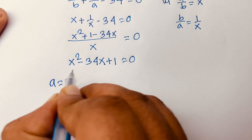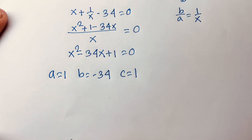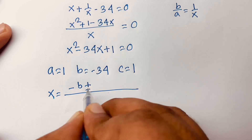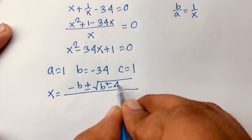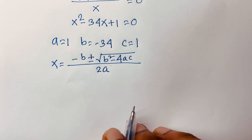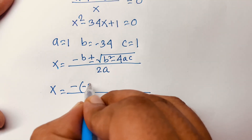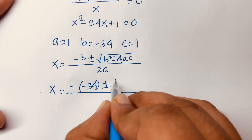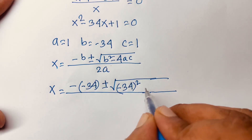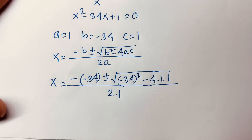So here A is equal to 1, B is equal to minus 34, and C is equal to 1. We know the quadratic formula: x equals minus B plus or minus square root of B squared minus 4AC, over 2A. Now we put in the values of A, B, and C.